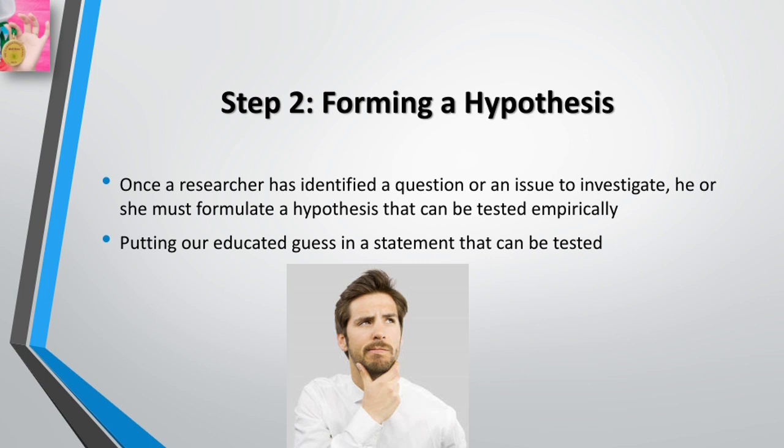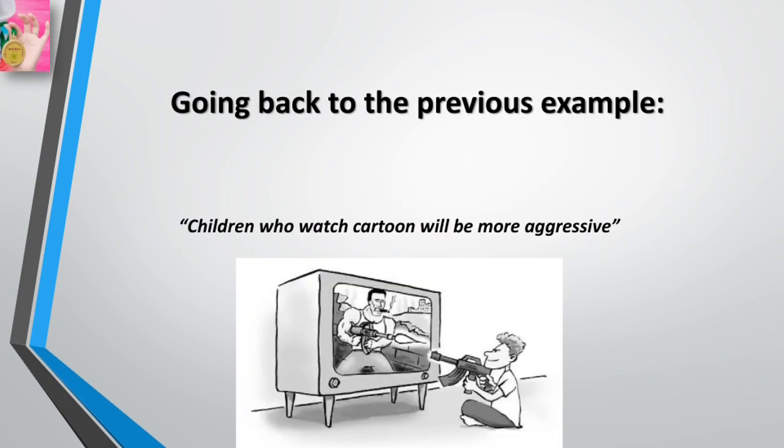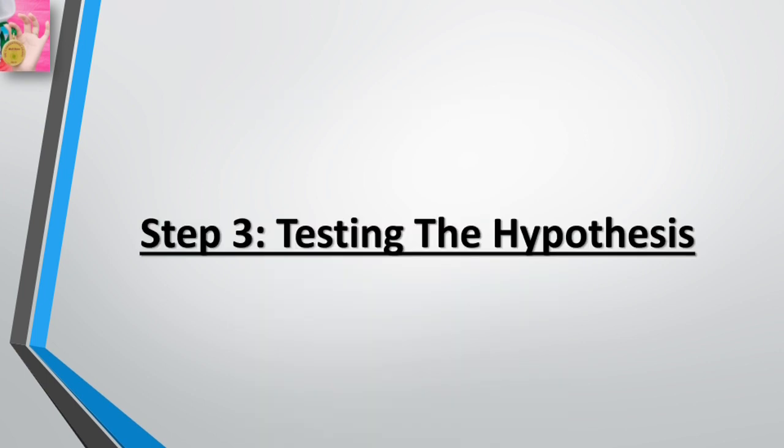Based on your initial observation about what's going on in your surroundings, you form an educated guess about the explanation for the behavior, putting it into the form of a statement that can be tested in some way. Going back to the previous example, you might say: 'Children who watch violent cartoons will be more aggressive.' The next step is testing the hypothesis.